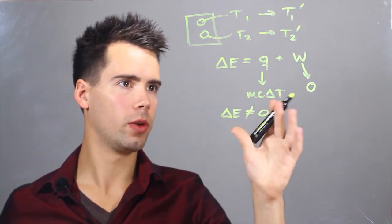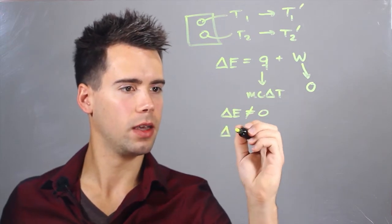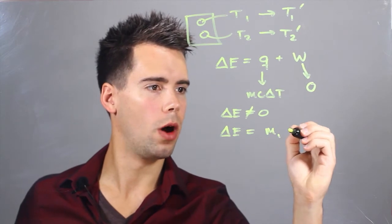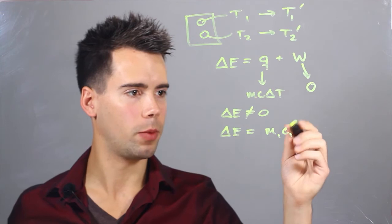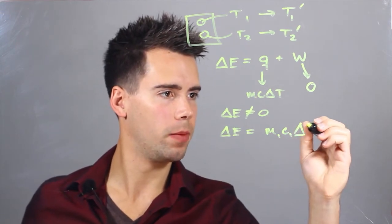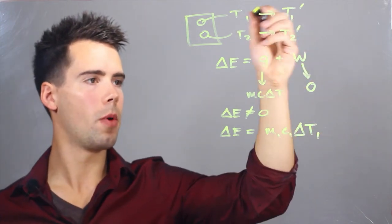So in our case though, say there is some chemical process, so it's non-zero, and we can find that delta E is equal to M1 C1, which is a specific heat, you can look this up online, and you can find that it's multiplied by delta T1. So that's that T1 prime minus T1.